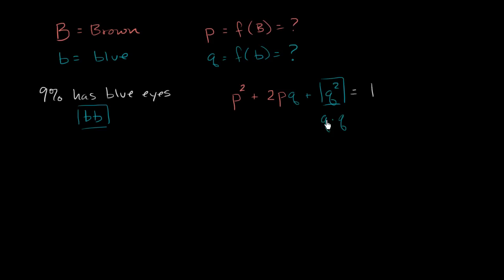This is the probability of getting two recessive alleles. Q is the frequency of the recessive allele. The probability of getting two of the recessive alleles, if you're in your population, is going to be 9%. So we could say Q squared is equal to 9%, or another way to think about it, this term right over here is 9% or 0.09. 9% has this genotype - that's what this tells us.